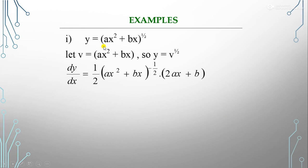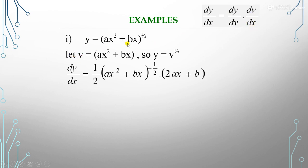For example, if our function is y = (ax² + bx)^(1/2), how can we differentiate y with respect to x? We know the chain rule formula: dy/dx = dy/dv × dv/dx. We apply this by noting that we have a compound function. We assume v = ax² + bx, so our function becomes y = v^(1/2).